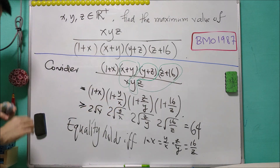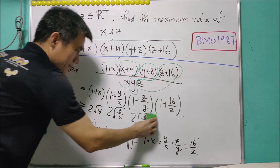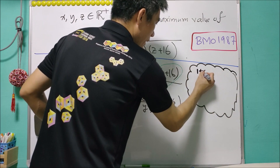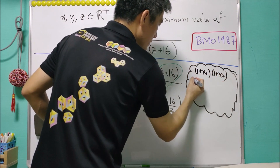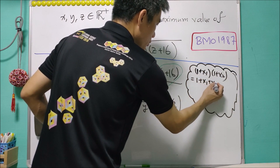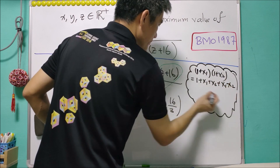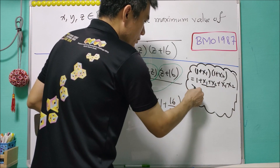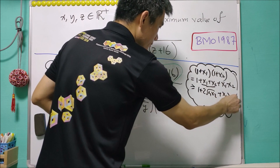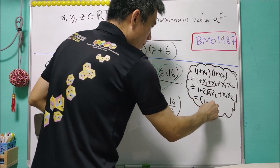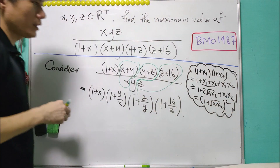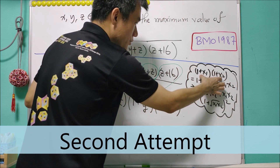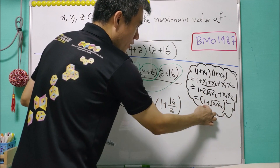We can modify our approach. Note that (1+x1)(1+x2) = 1 + x1 + x2 + x1·x2. Since x1 + x2 ≥ 2√(x1·x2) by AMGM, this is at least 1 + 2√(x1·x2) + x1·x2, which equals (1 + √(x1·x2))². So for positive reals x1, x2: (1+x1)(1+x2) ≥ (1 + √(x1·x2))².